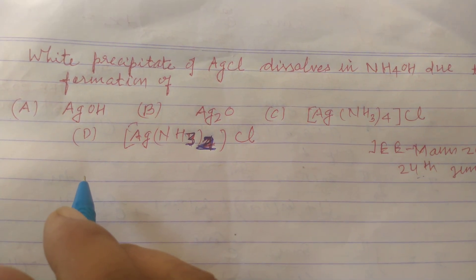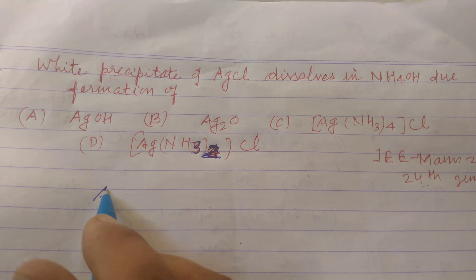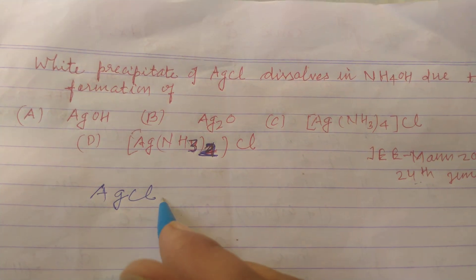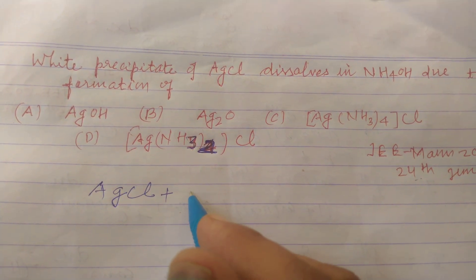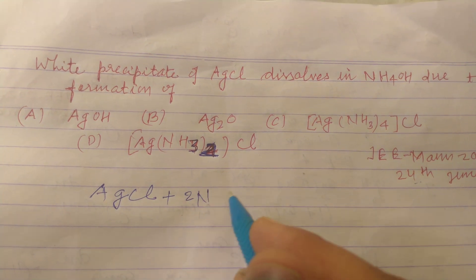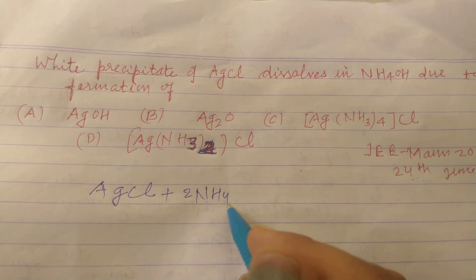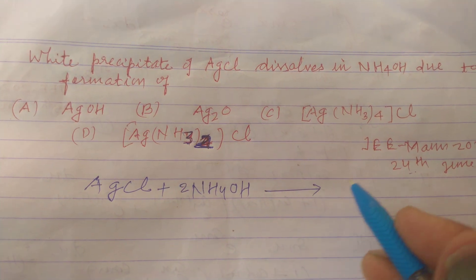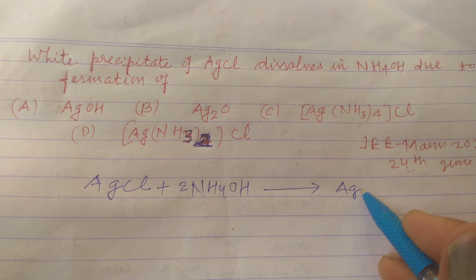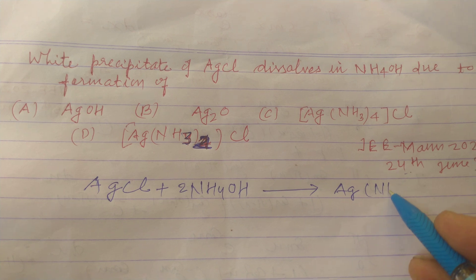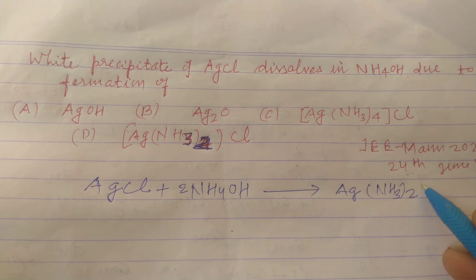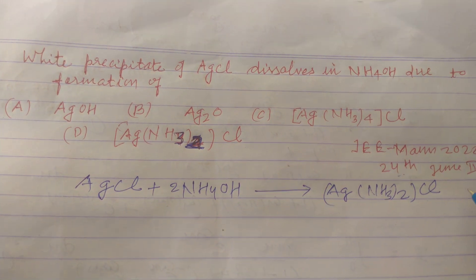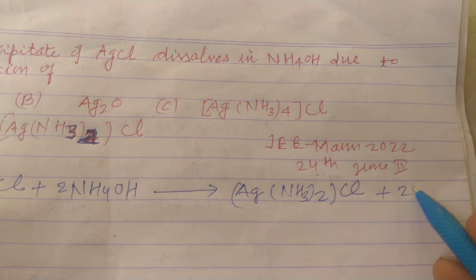First we write the reaction of AgCl with NH4OH. So AgCl plus 2NH4OH gives rise to [Ag(NH3)2]Cl plus 2H2O.